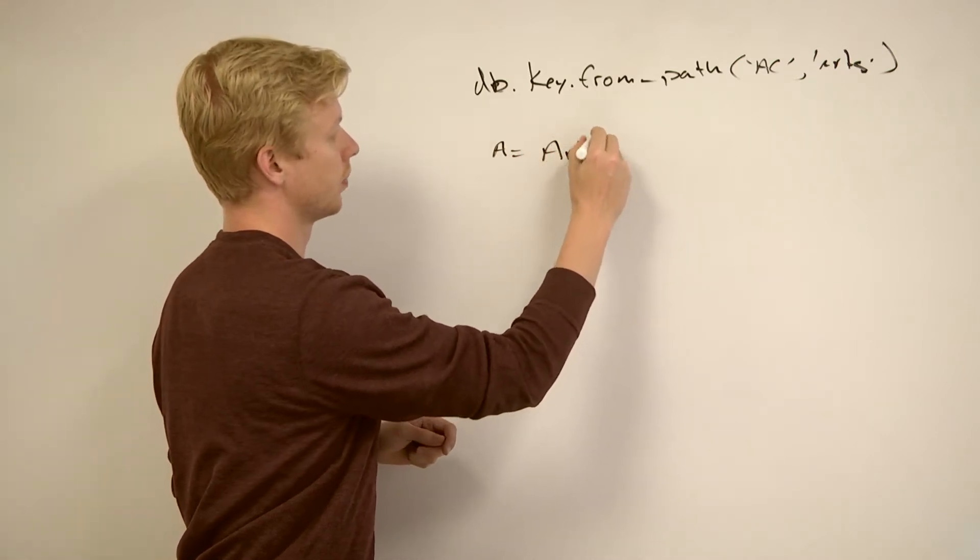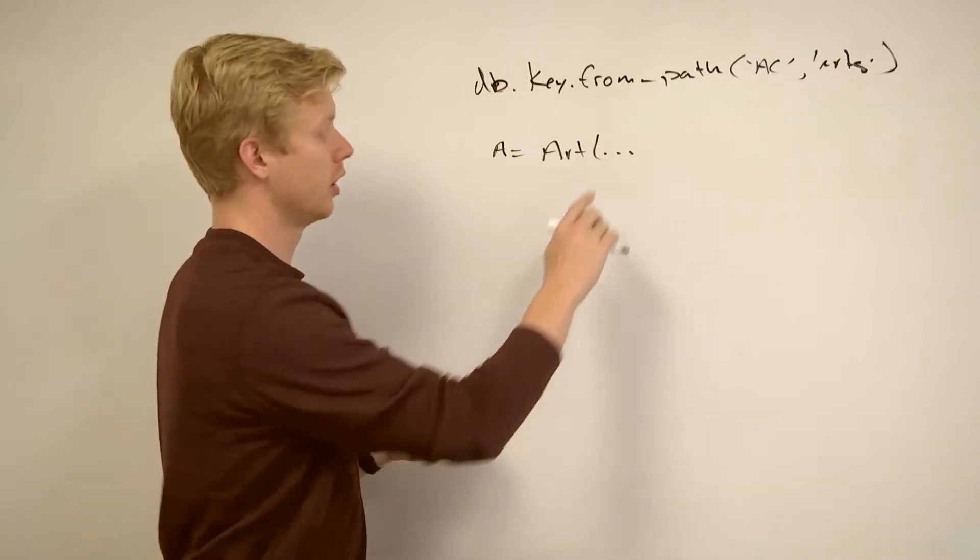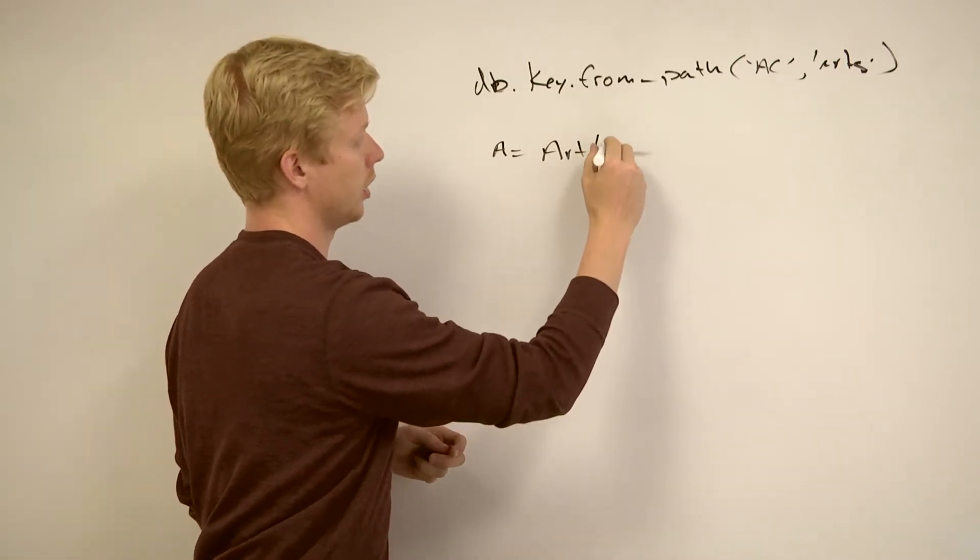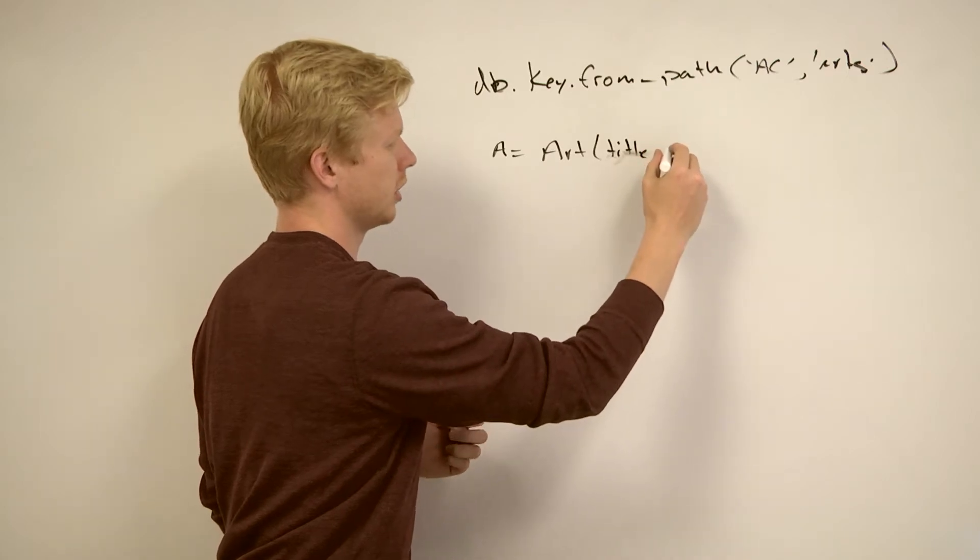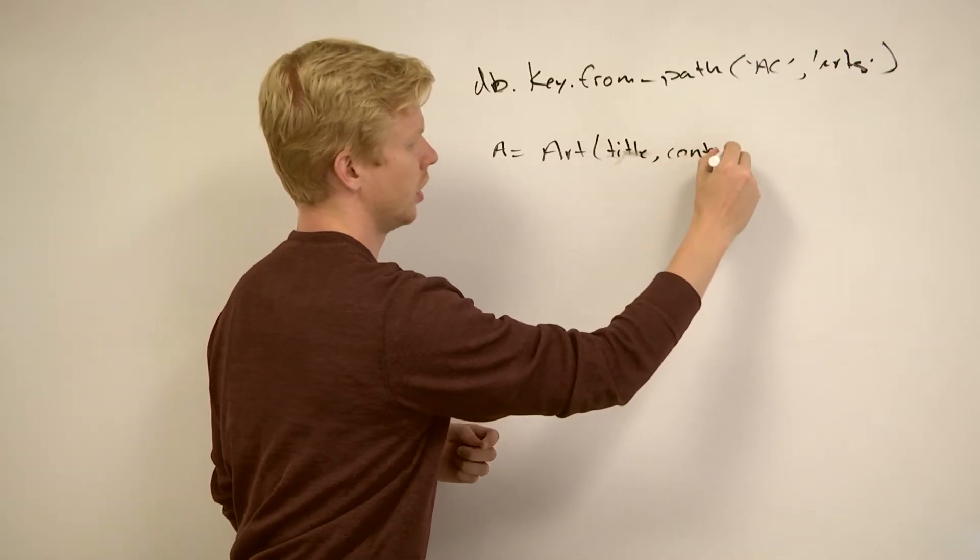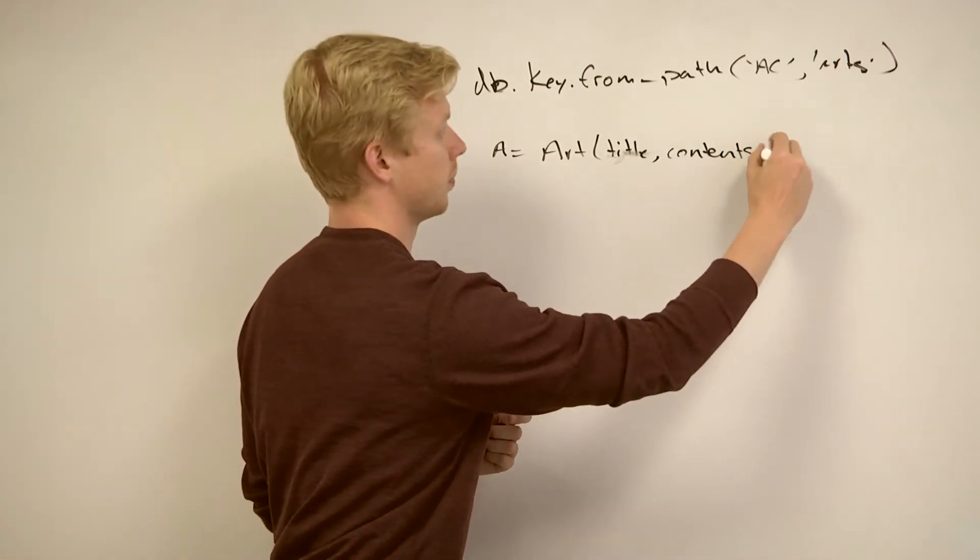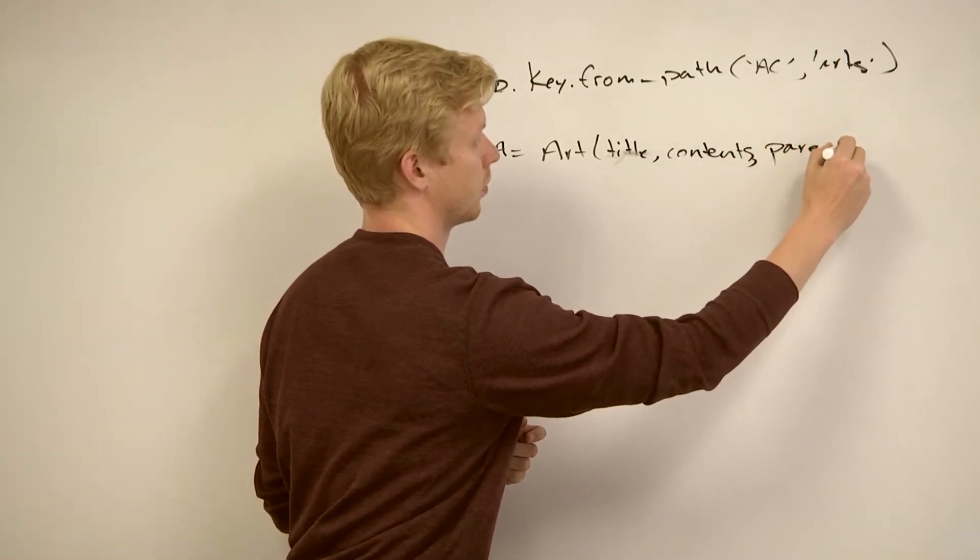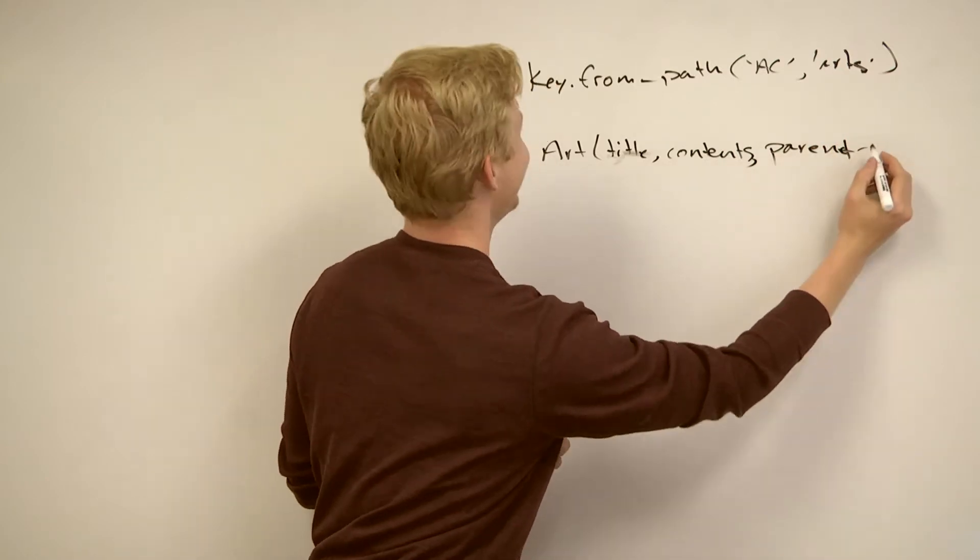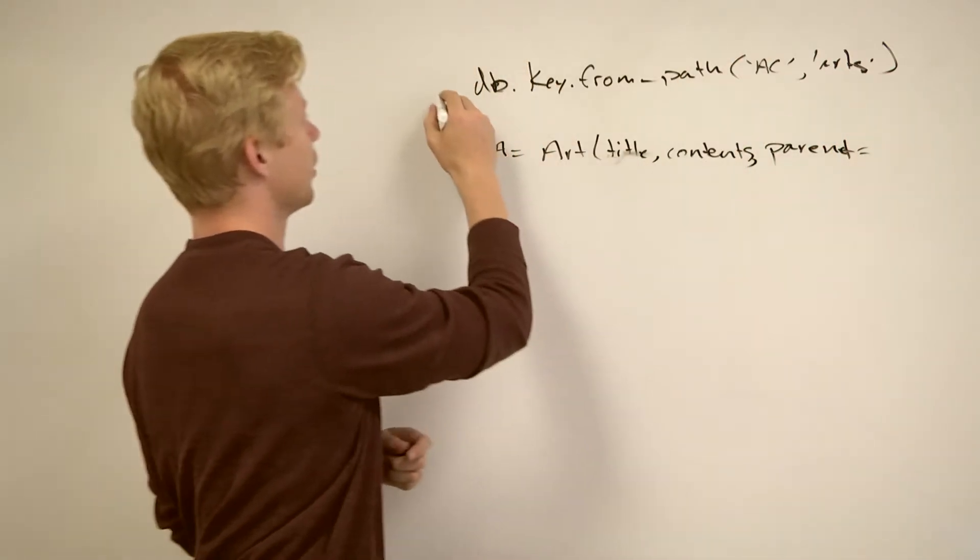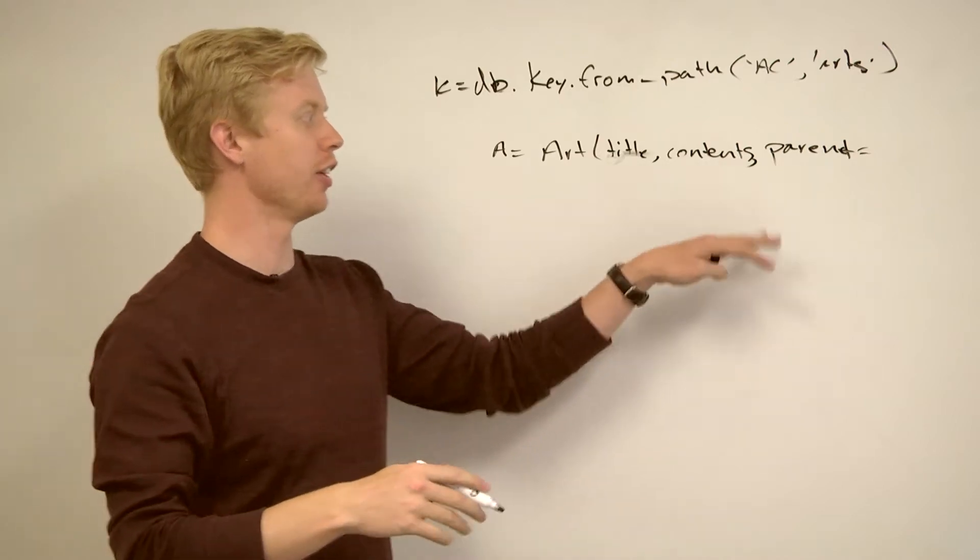I think when I said something like a equals art, and then you'd have all those properties. I guess I could spell them out here. We have title, what did I call it, the contents of the art. There's probably another parameter called parent. Parent equals whatever this key is. We'll call that k. I think it was a function call.